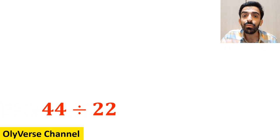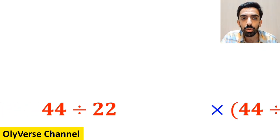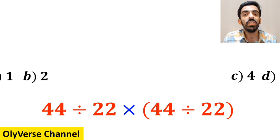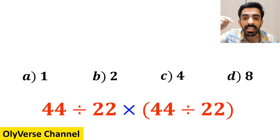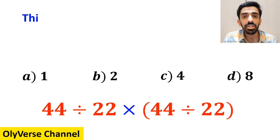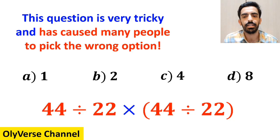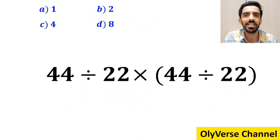What is the value of the expression 44 divided by 22 multiplied by open parenthesis 44 divided by 22 close parenthesis? Which option do you think is the correct answer to this question? This question is very tricky and has caused many people to pick the wrong option. Let's go step by step and solve it together.